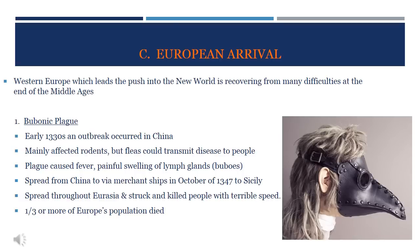This brings us to European arrival, which comes after these earlier waves of explorers. Western Europe leads the push into the New World right as it's recovering at the end of the Middle Ages, coming out of the Dark Ages and dealing with many difficulties. One of these was the Bubonic Plague, known as the Black Death. It first began in the early 1330s in China and the steppes above China, mainly affecting rodents, whose fleas then transmitted the disease to people.